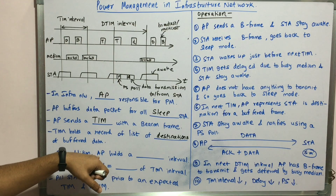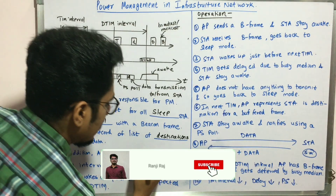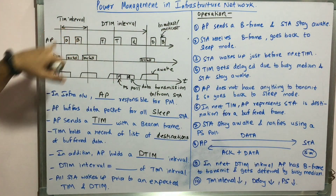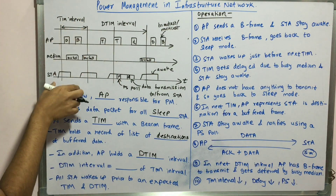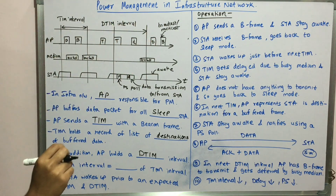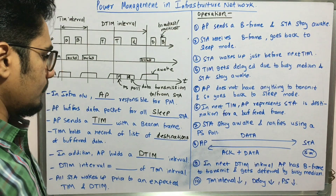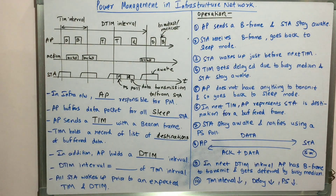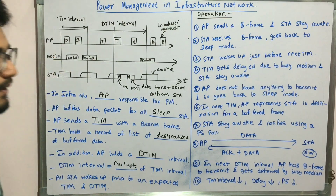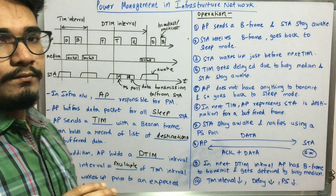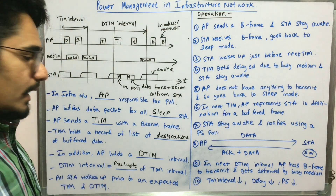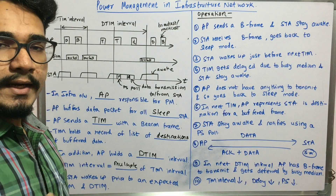In addition, the access point also holds a DTIM interval — delivery traffic indication map interval. The TIM interval is the smaller period, and the DTIM interval is larger — a multiple of the TIM interval. For example, if a TIM interval is two, then the DTIM interval will be four. All stations wake up prior to an expected TIM and DTIM interval.